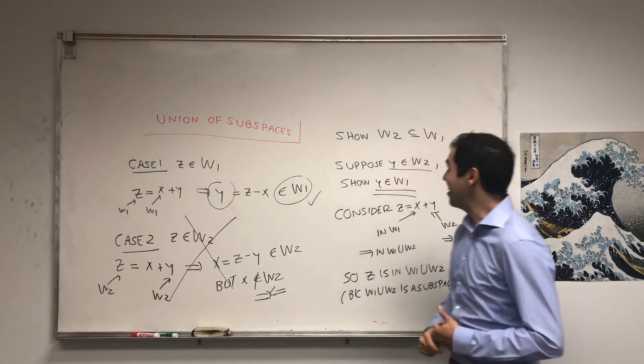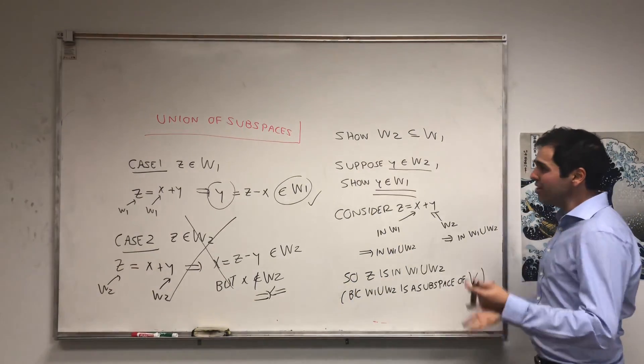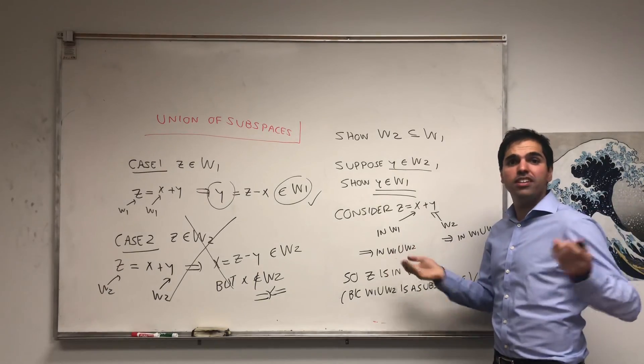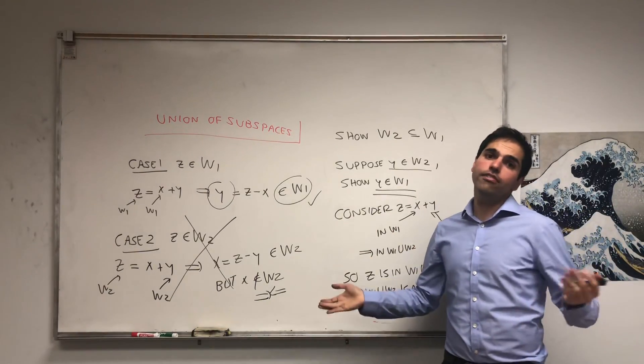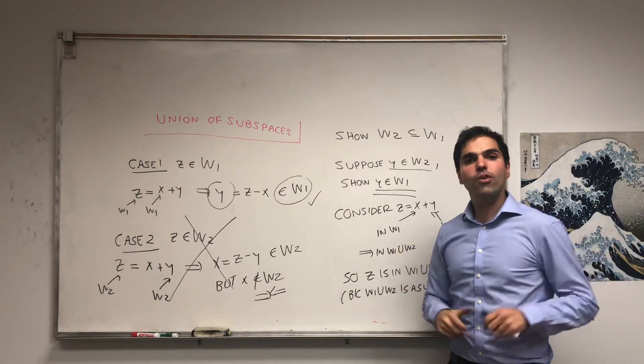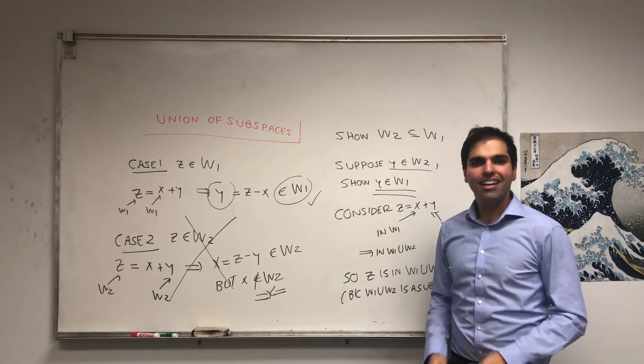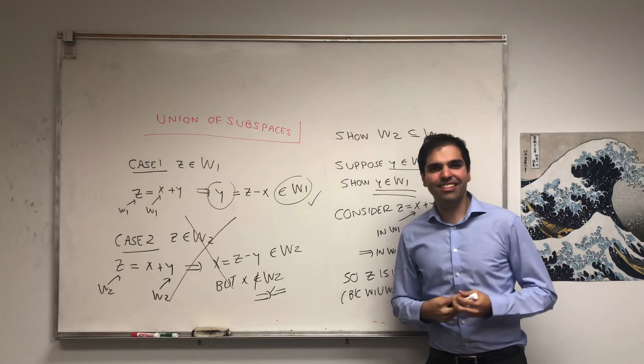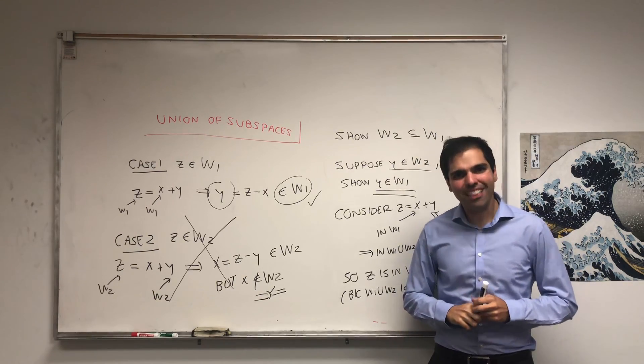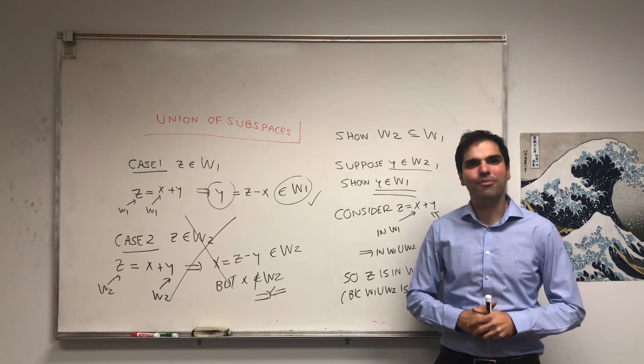Haven't said that in a long time. So, yeah. We are done. So, the union of subspaces is a subspace only if only in the trivial case where one is included in the other. All right. I hope you like this little proof. If you want to see more math, please make sure to subscribe to my channel. Thank you very much.